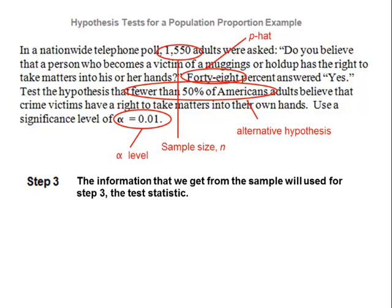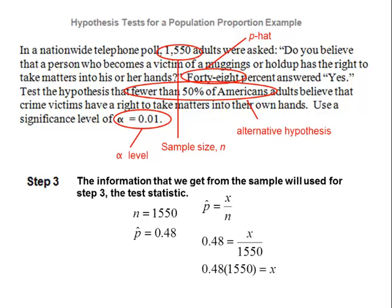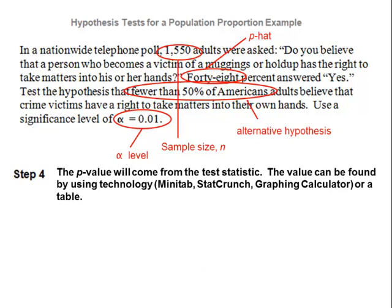Step three: from the information we know, n is 1,550 and p-hat is 0.48. In order to use technology, we have to compute the value of x. The formula for p-hat is x over n, so substituting in we have 0.48 equals x divided by 1,550. Solving for x, we multiply both sides by 1,550 and get x equal to 744. Step four, the p-value will come from the test statistic. We can use technology or a table.